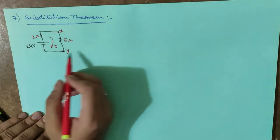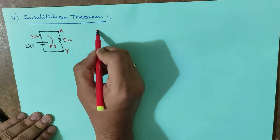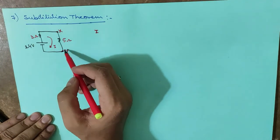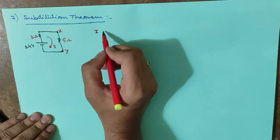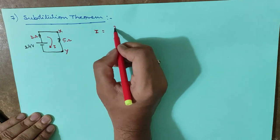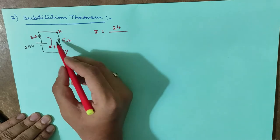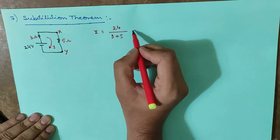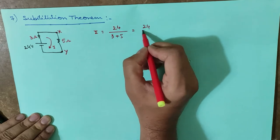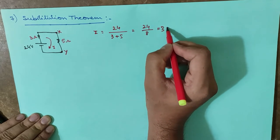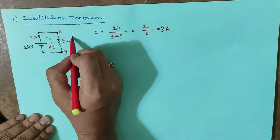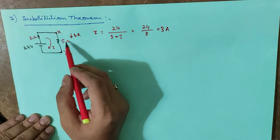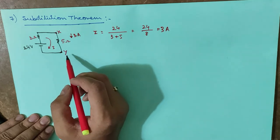First, I need to identify the current passing through this 5 ohm resistor — that is, the current passing through this branch. The current I equals the voltage 24 divided by the sum of resistances 3 plus 5 ohms, which equals 24 divided by 8, which equals 3 amperes. So 3 amperes of current is flowing through this branch.